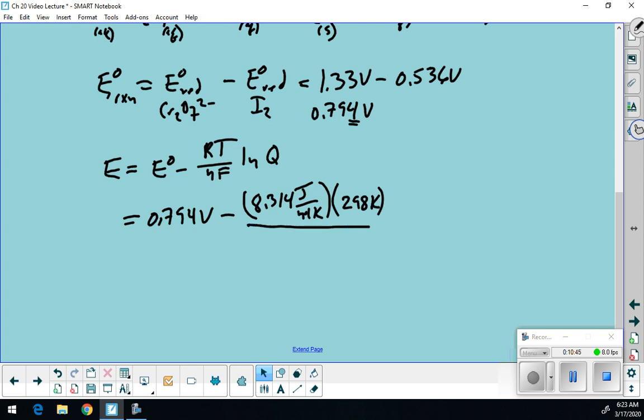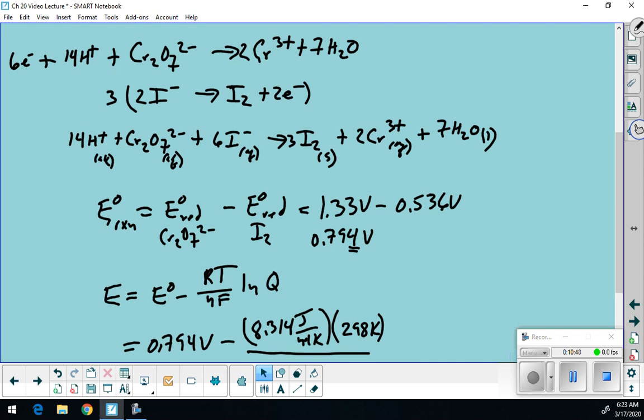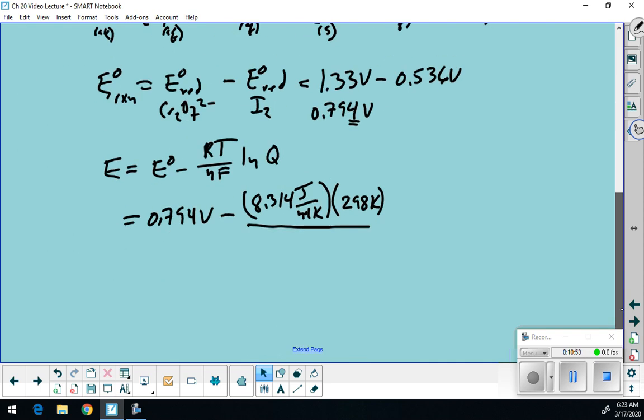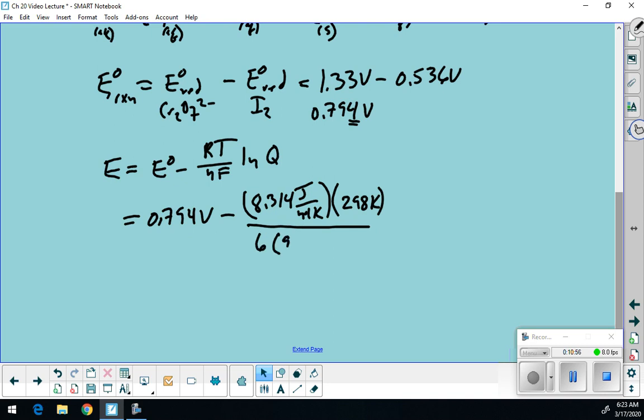How many electrons were transferred in this reaction? Well, six. So I have n of six. 96485 was my joules per volt mole. And so everything kind of cancels out. My moles are both in the denominator. My Ks cancel. My joules cancel. And I'm going to have one over one over volts, which makes it volts. And I have the natural log of Q.